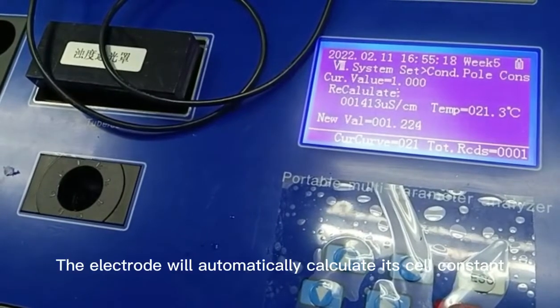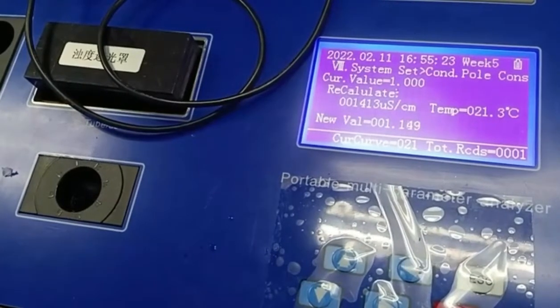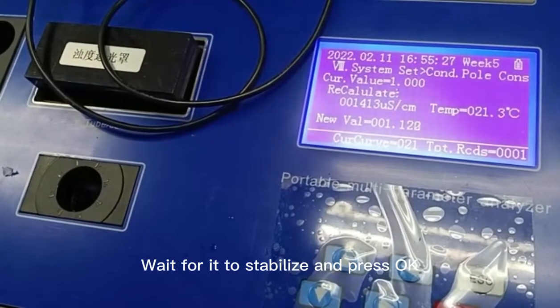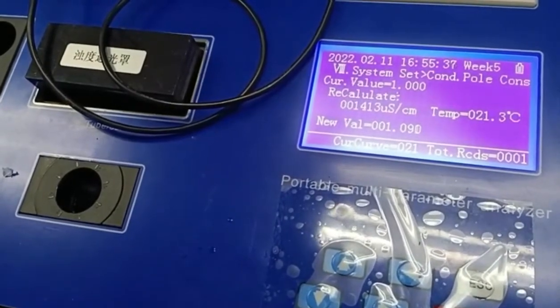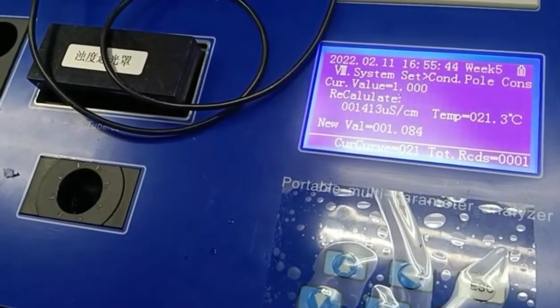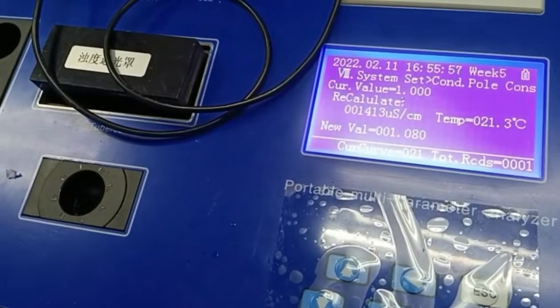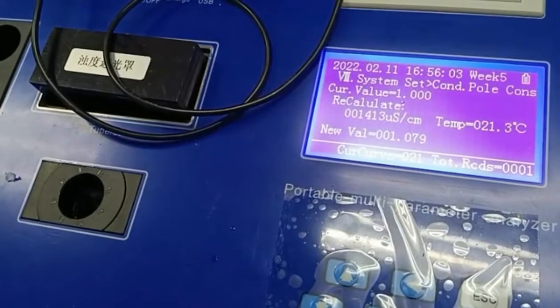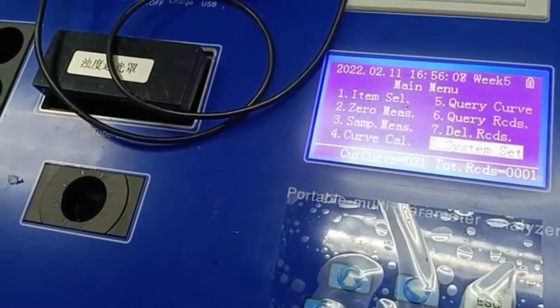The electrode will automatically calculate its cell constant. Wait for it to stabilize and press OK. The cell constant has stabilized and we press OK.